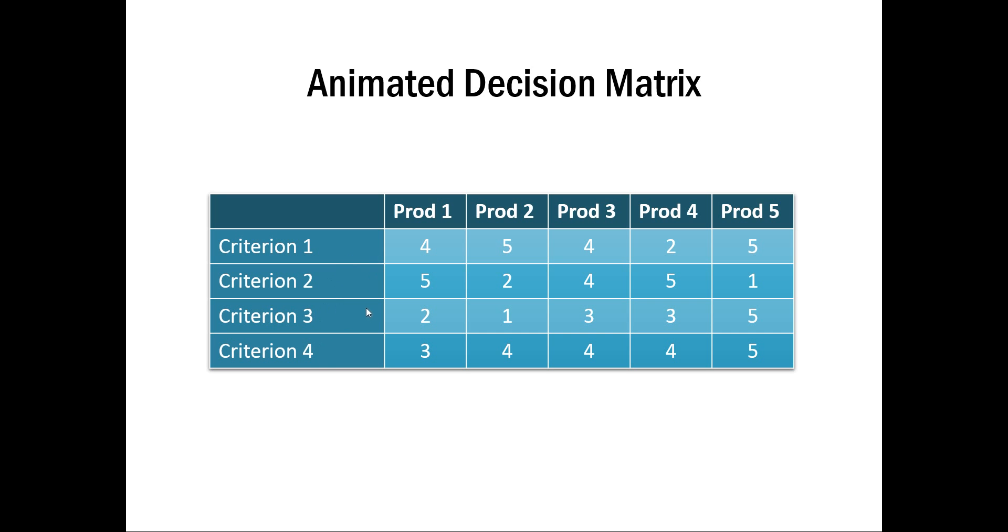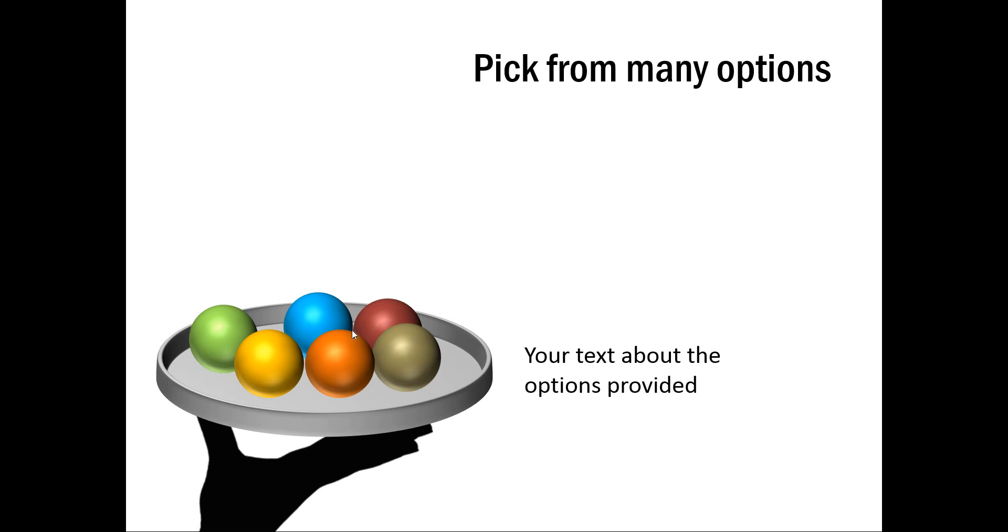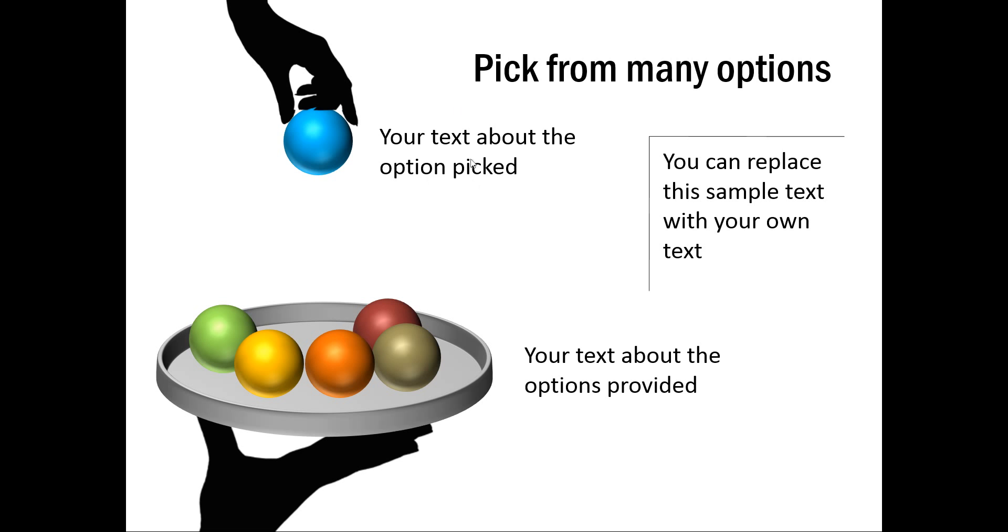And as you can see here, this option is used to choose one option out of the various options available. And I am going to show you the same concept in different ways. So this one is about picking from many options. On click you have 6 of the options shown on a platter. And then on another click you have one of the options picked and you can talk about what the option is and the associated explanation for it.